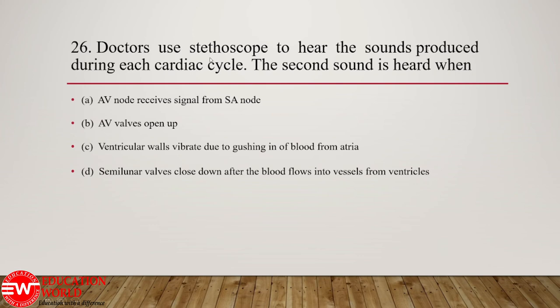Question number 26: doctors use a stethoscope to hear sounds produced during each cardiac cycle. The second heart sound is heard when — semi-lunar valves close down after blood flows into the vessels from the ventricles. For your information, the beating of the heart produces two sounds: the first heart sound (lub) and the second heart sound (dub). The first heart sound is produced by closure of the bicuspid and tricuspid valves, whereas the second heart sound is produced by closure of the semilunar valves, present at the base of the pulmonary trunk and aorta.